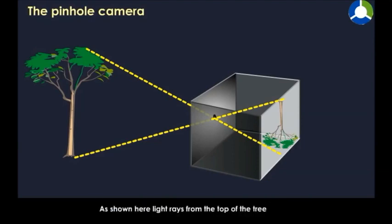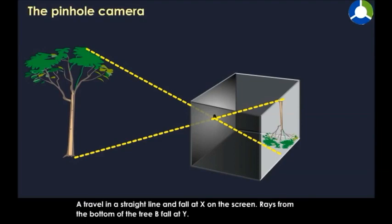As shown here, light rays from the top of the tree, A, travel in a straight line and fall at X on the screen.